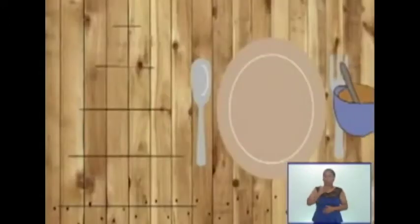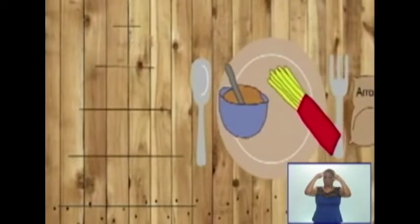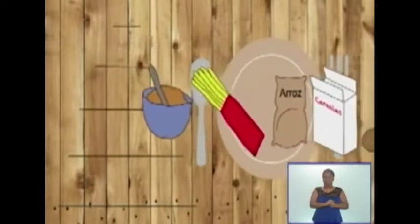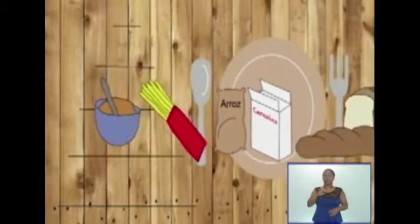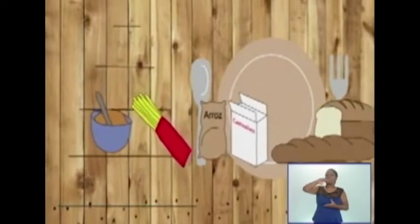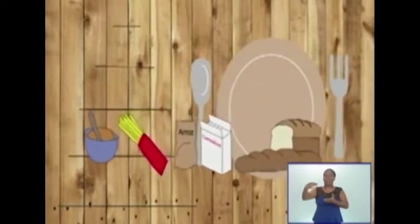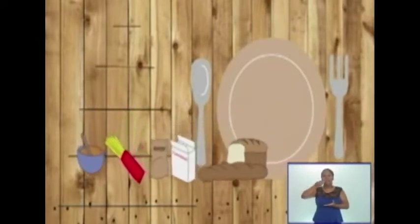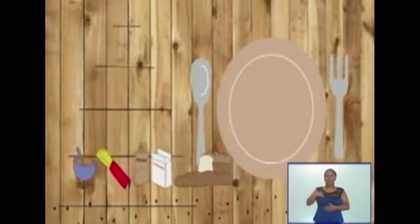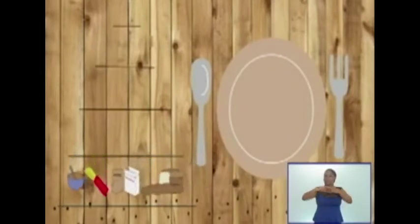Como pueden observar, en el primer nivel, que es el inferior, conseguimos alimentos como los cereales. Entre otros, podemos conseguir el arroz y la avena. En este nivel también se encuentran las pastas, el pan y los granos.